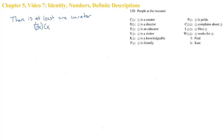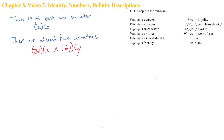But suppose we wanted to say there are at least two curators. One attempt might be to say 'some x, cx' and 'some y, cy.' That won't actually work, because what it does is say there's at least one curator and there's at least one curator, with nothing to distinguish the first mentioned curator from the second. So as long as there is at least one curator, both halves of this sentence will be true, making the whole conjunction true.